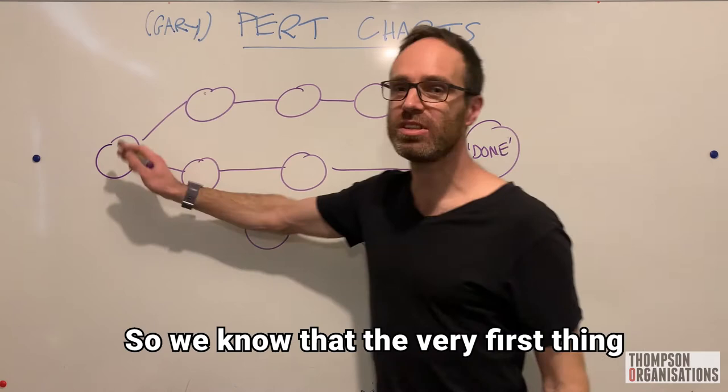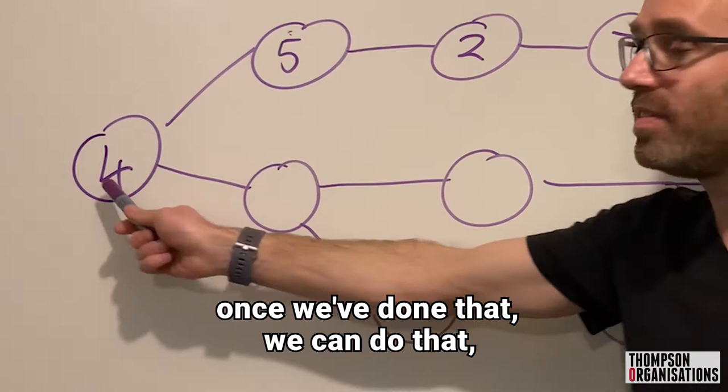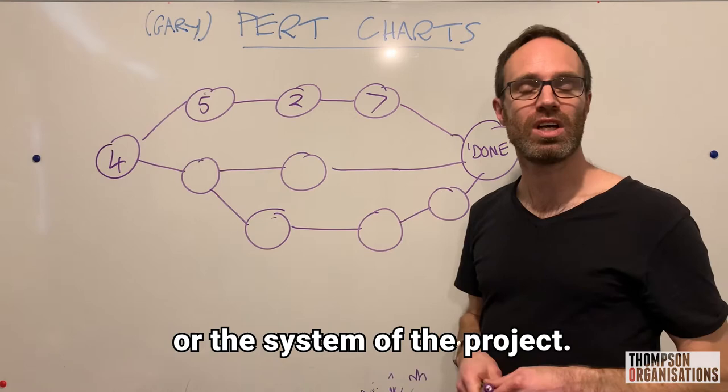So we know that the very first thing we need to do on the project is this thing over here. And then what we know is that this one's going to take five days. This one's going to take two days. That one's going to take seven days. So what this represents is once we've done that, we can do that, but there's nothing stopping us starting this task as well. But we can't start this task or this task until we've done that task. So you see how it sets up the overall picture or the system of the project.